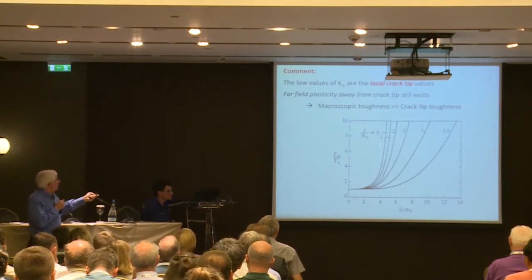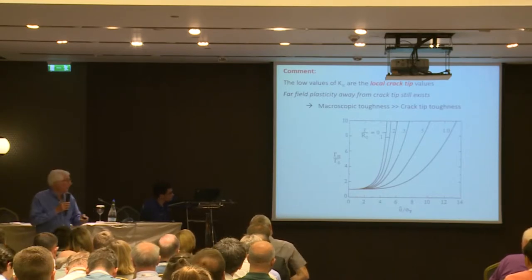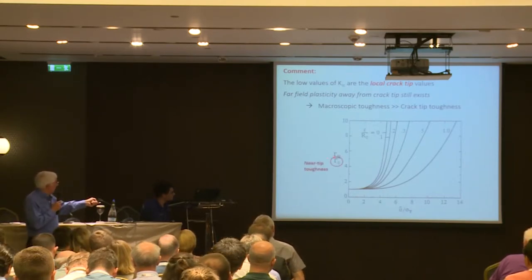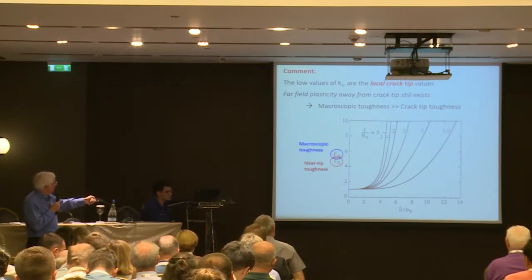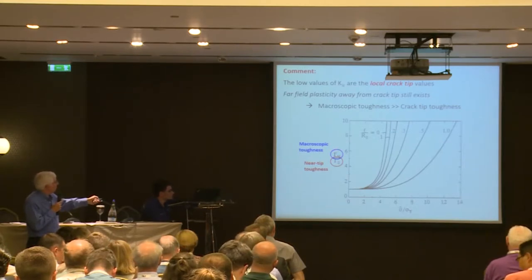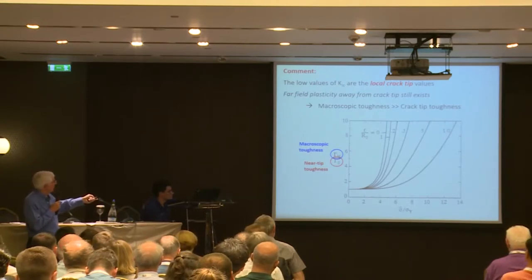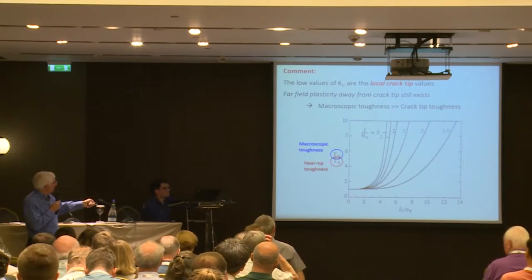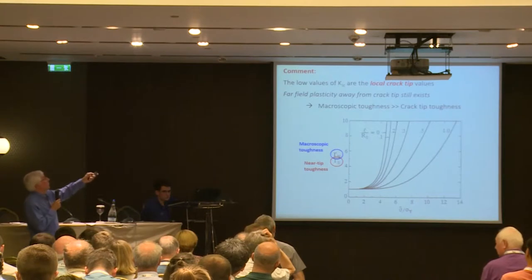I want to remind you that the low values of K1C that you see are the crack-tip values — essentially the local cleavage toughness. The surrounding plasticity gives you the macroscopic toughness, which is much higher. The measured toughness may be up here somewhere; it's the local toughness that's changing, and ductile fracture processes give you much more toughness on top of that.